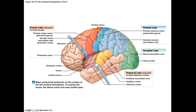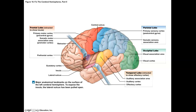The frontal lobe is everything in the anterior portion of the brain, color-coded in a peachy color. It's separated from the parietal lobe by the central sulcus — a groove that runs down both hemispheres like a headband. Anything in front of that groove is the frontal lobe; behind it is the parietal lobe, shown in blue.